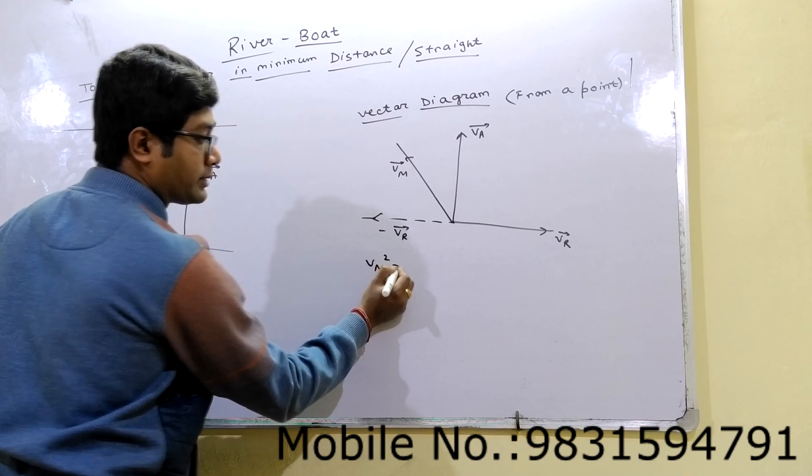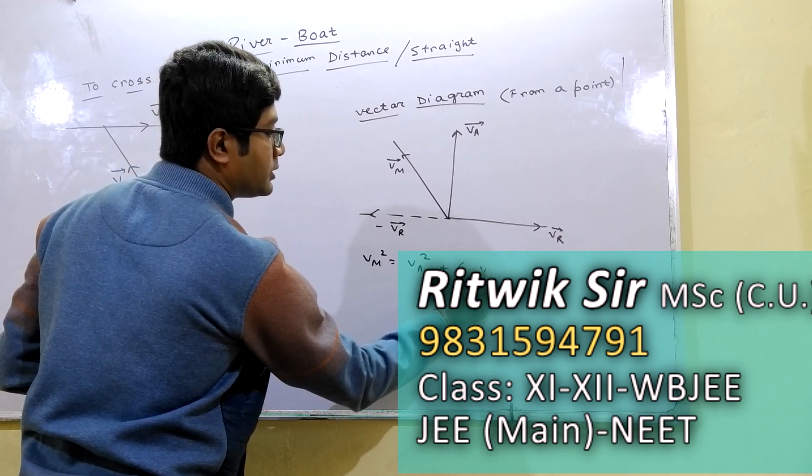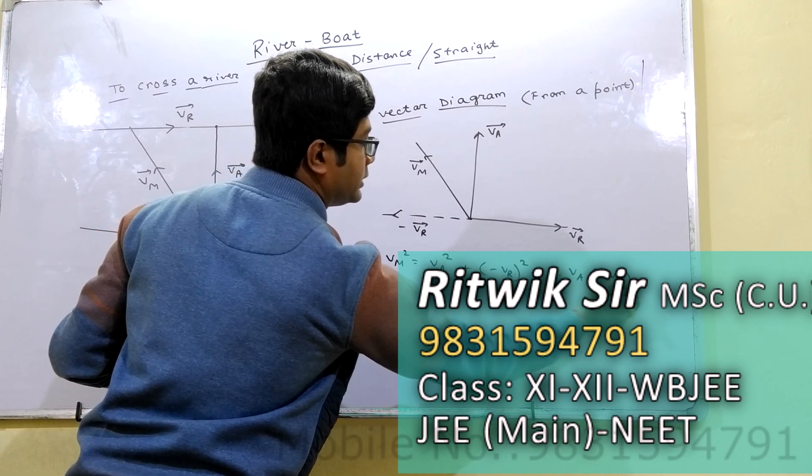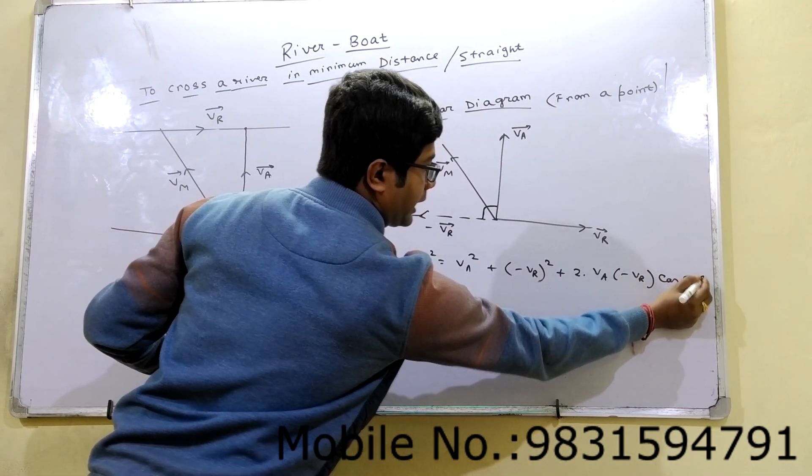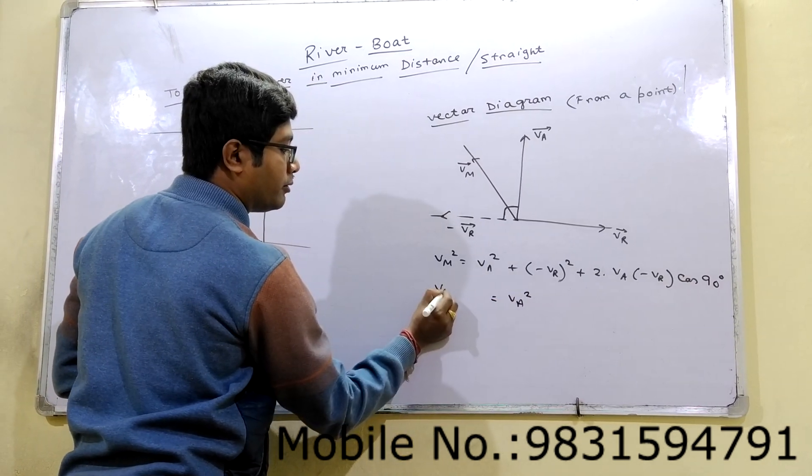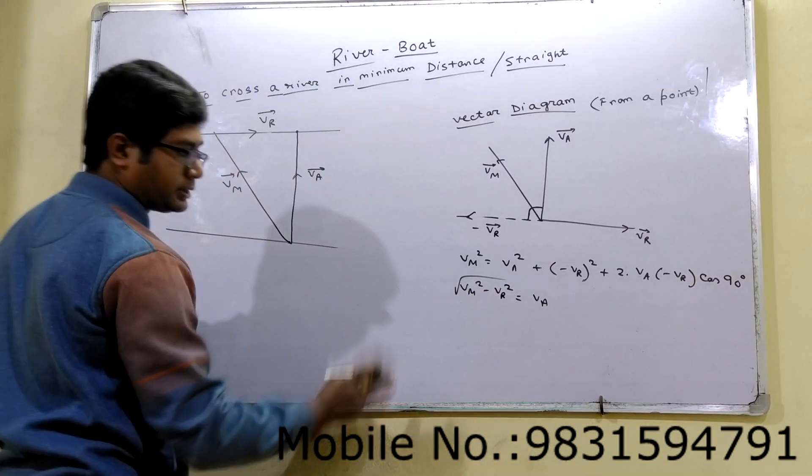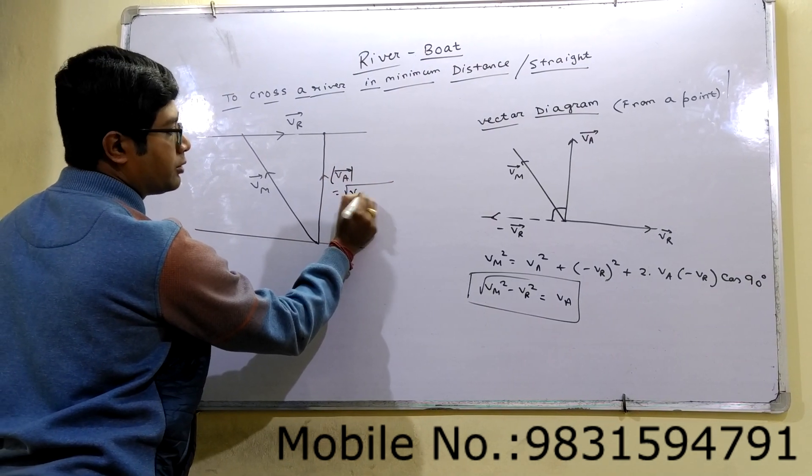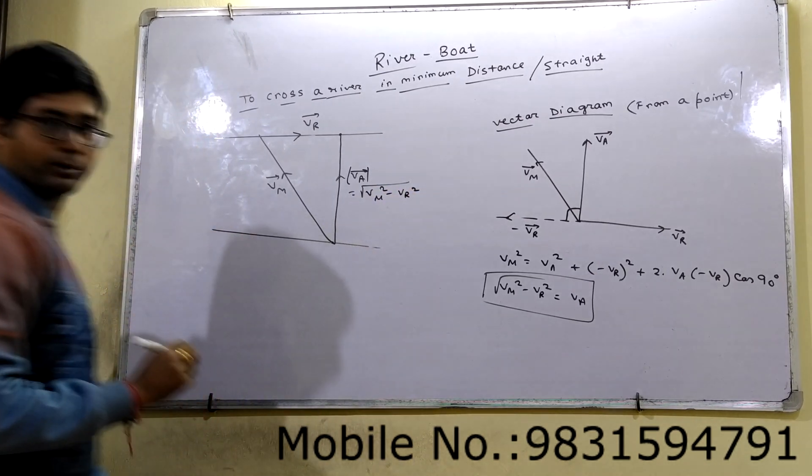So VN square, resultant square is equal to first vector square plus second vector square plus 2 into first into second into cos angle between two vectors, what, 90 degree. Cos 90, this is 0. So VA will be root over, mod of VA is equal to VN square minus VR square. This is the formula.